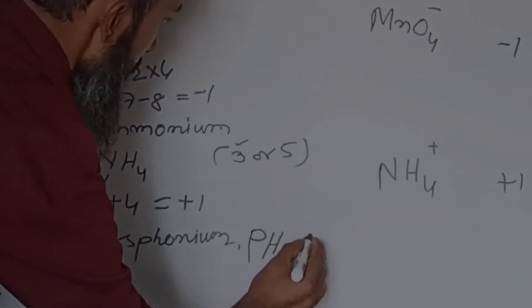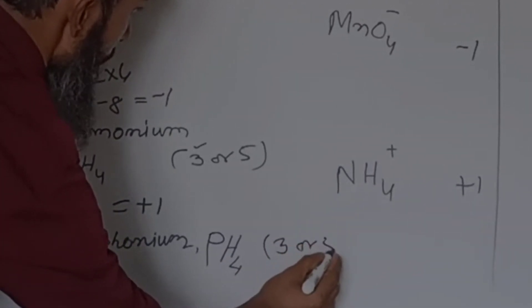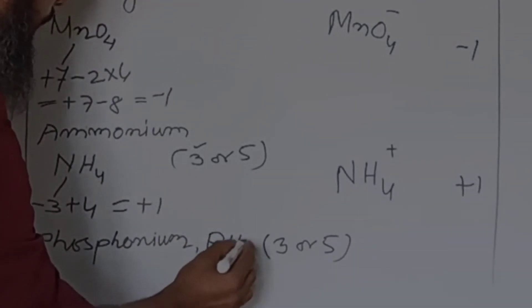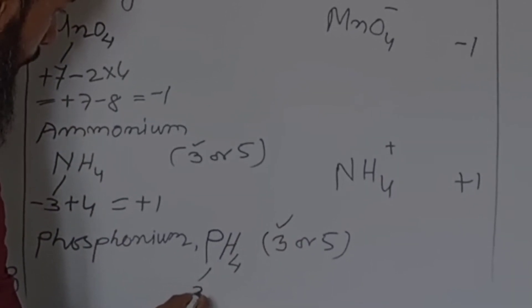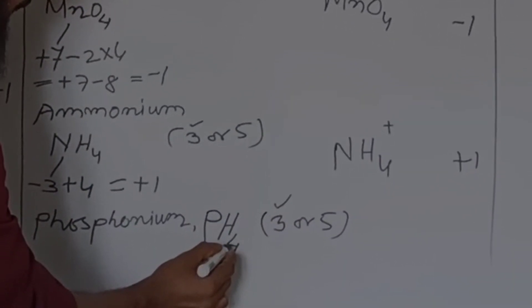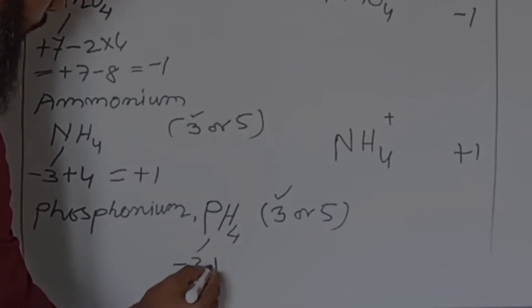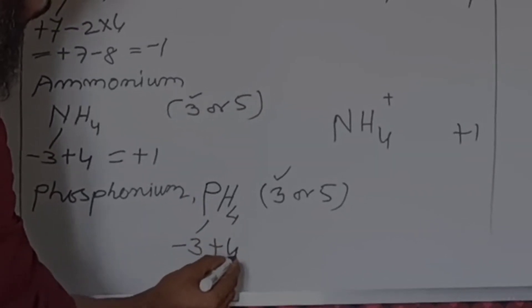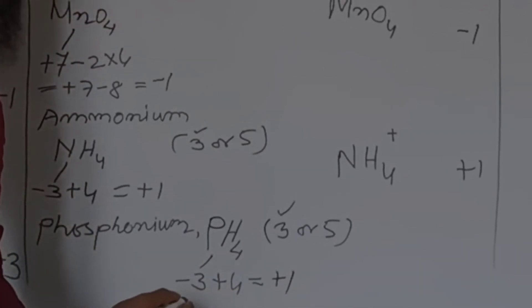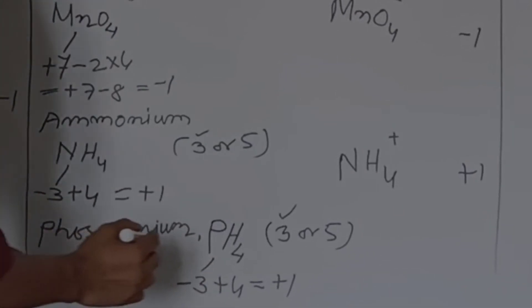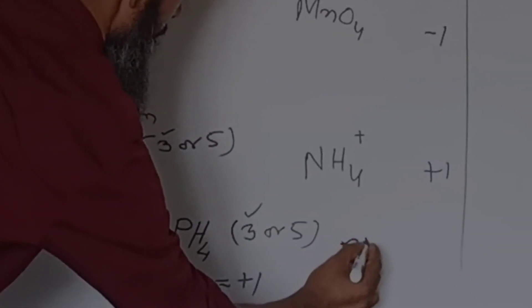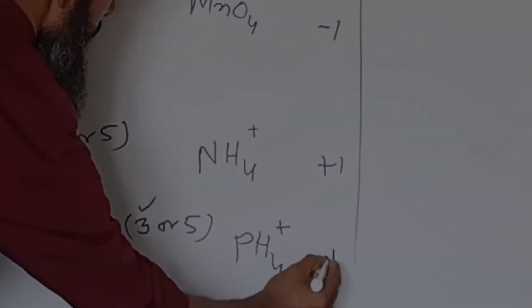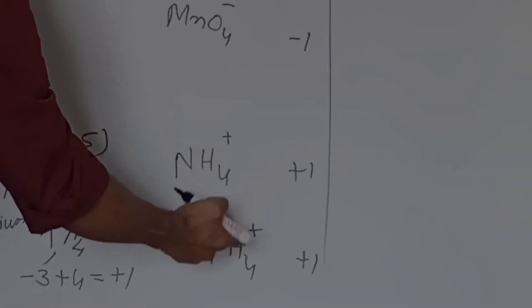Now phosphonium — phosphorus valency can be 3 or 5. Same principle: we take valency 3 with respect to the electropositive character. Phosphorus is electronegative, hydrogen is electropositive with valency 1. Four hydrogen atoms give plus 4 minus 3, valency becomes plus 1. Its symbol is PH4 1-plus. Both ammonium and phosphonium are cations.